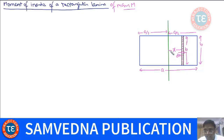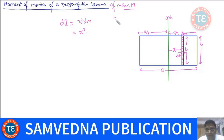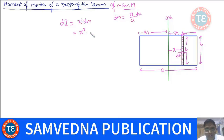Every point on this rod lies at the same distance x from the axis. So I can say the moment of inertia of this element about this axis is x²·dm. And dm = (M/a)·dx — that is the surface mass density times the element width.